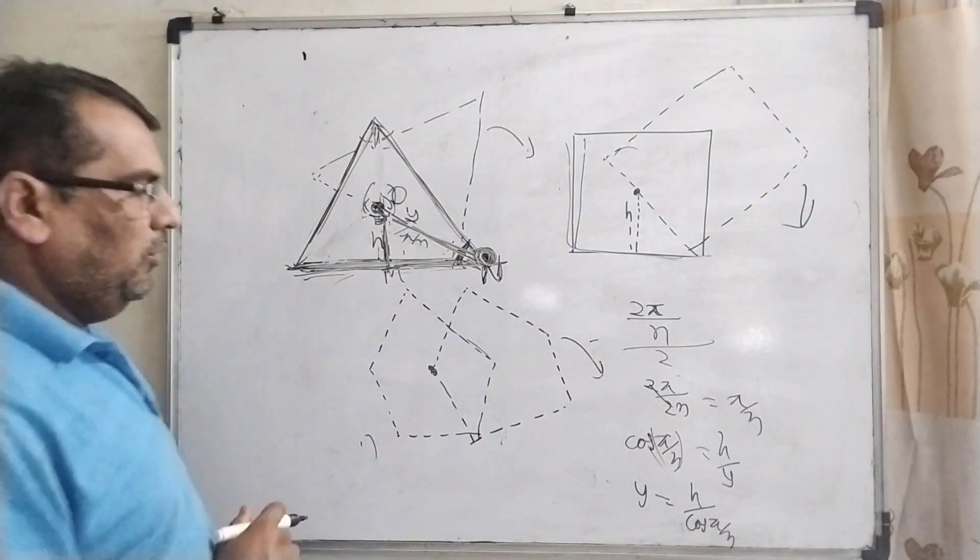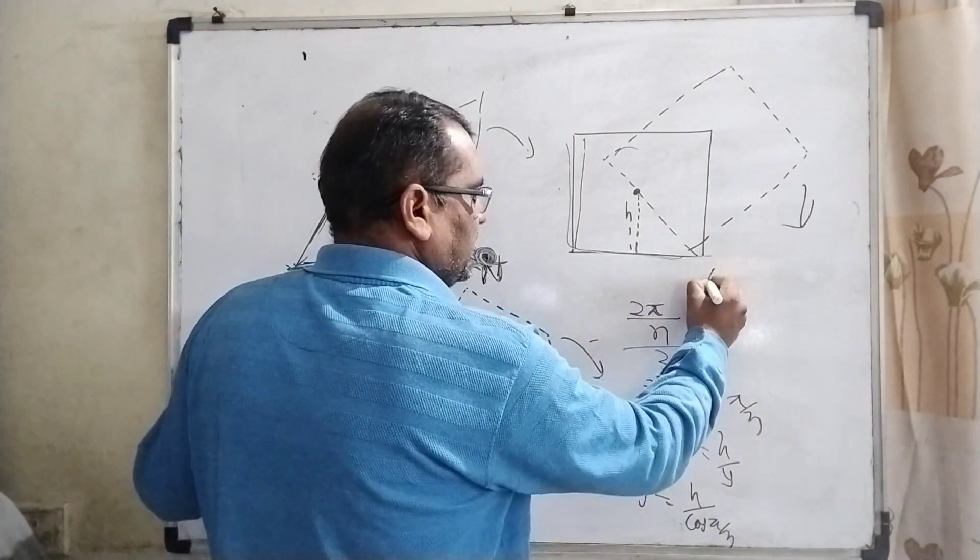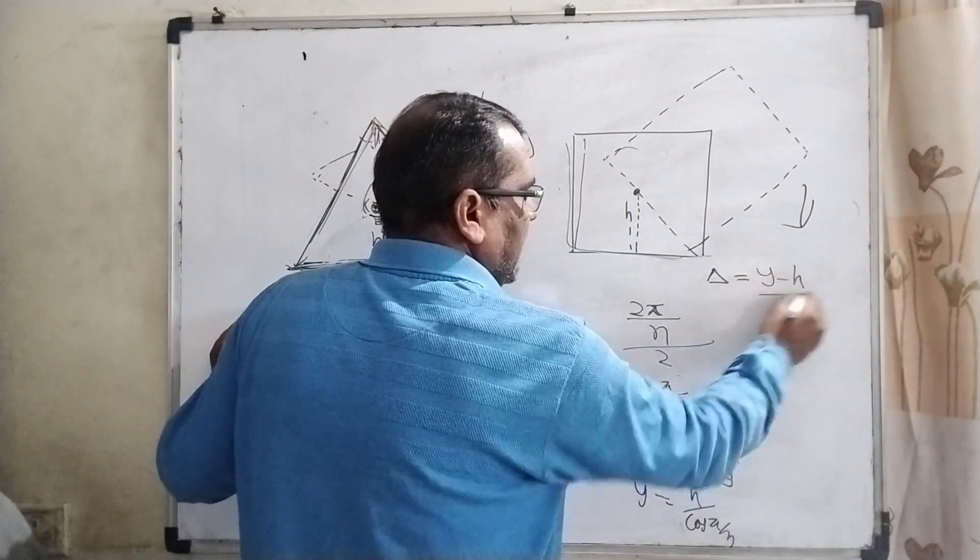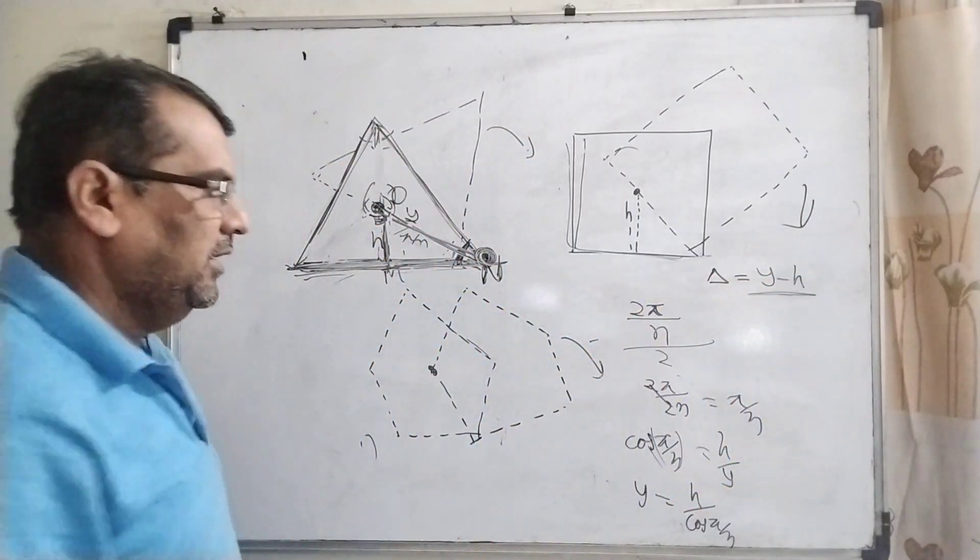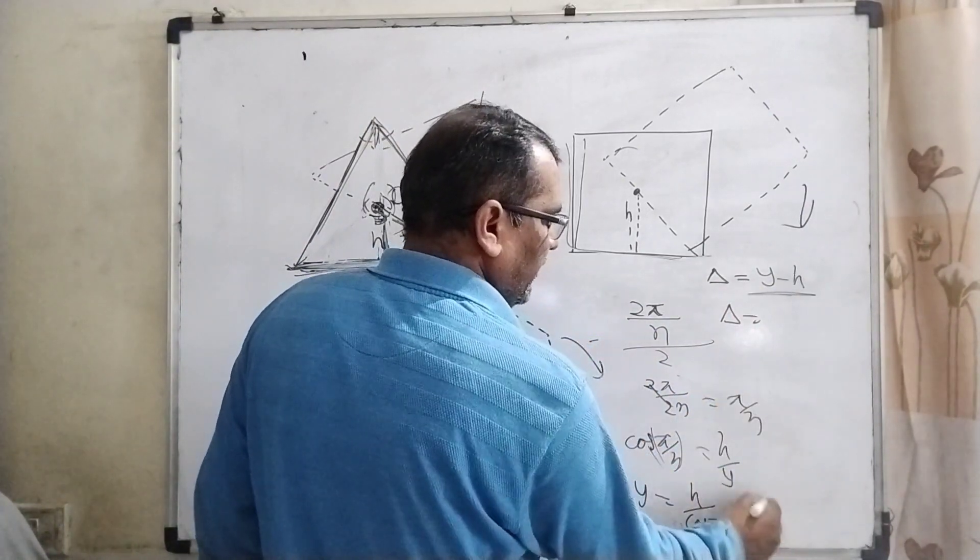Now what is the difference in the center of mass? The center of mass shift equals total y minus h - that is the shifting of center of mass. Then substitute the value of y from this given equation: h/cos(π/n) - h.